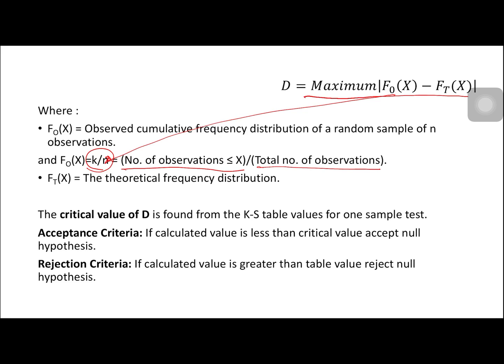For the critical value of D, it is found from the KS table values for one sample test. For the acceptance criteria, if calculated value is less than the critical value, then we fail to reject the null hypothesis. For the rejection criteria, if the calculated value is greater than the tabular value, then we reject the null hypothesis.